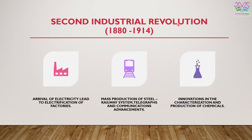The second industrial revolution is basically the arrival of electricity, which led to the electrification of factories and made things easier. Besides this, there was mass production of steel, which led to the railway system, telegraph, and communication advancements. Innovation in the characterization and production of chemicals is also considered part of the second industrial revolution.